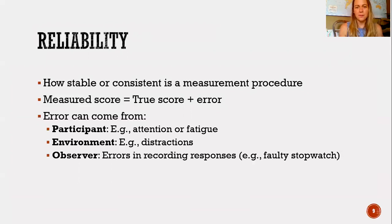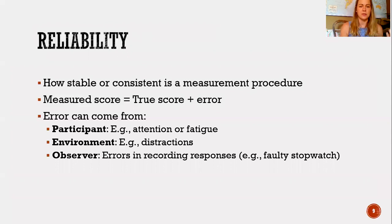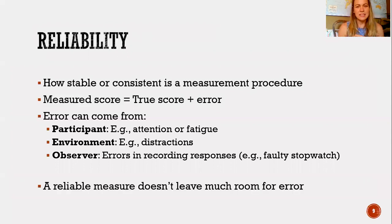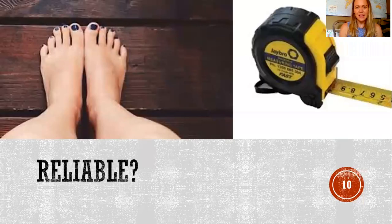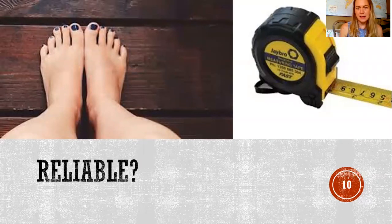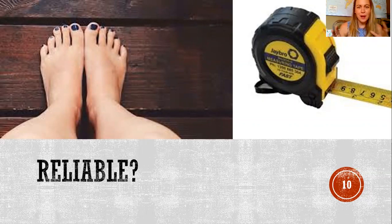That error can also come from the measurement procedure itself. For example, on IQtest.com you have to answer quickly on your computer, and if your computer has some time lag or the internet connection fades out, your performance will suggest lower performance than your actual skills. A reliable measure doesn't leave much room for error. To give you an example, if you've ever had to measure the length of a room without a measuring tape and tried to use your feet — you'd get a ballpark estimate, but it's clearly not going to be as accurate as a measuring tape. This is the idea behind reliability.